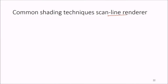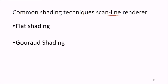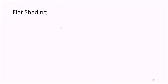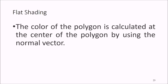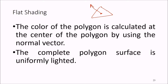Common shading techniques for scan line renderers are flat shading, Gouraud shading, and Phong shading. With flat shading, the color of the polygon is calculated at the center of the polygon using the normal vector, and the complete polygon surface is uniformly lighted.